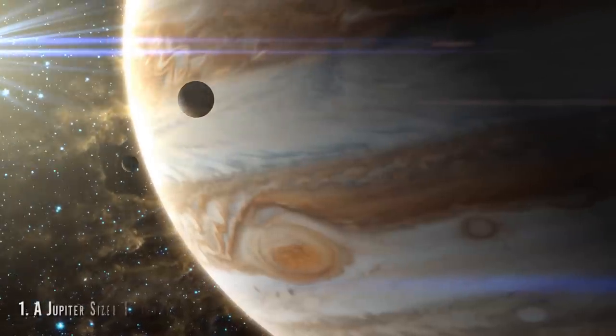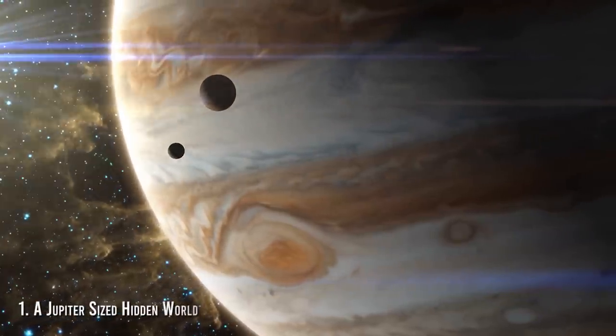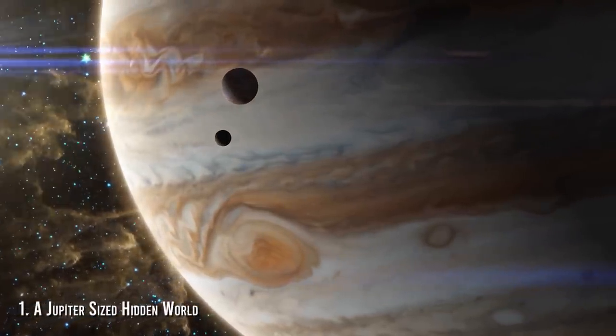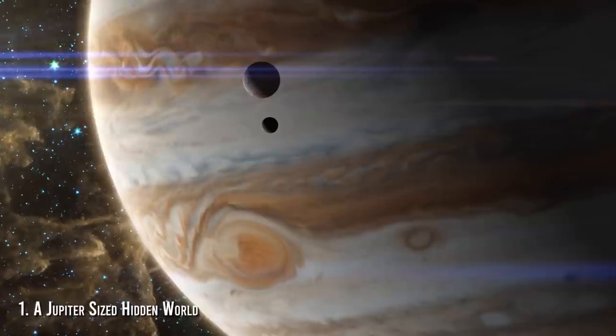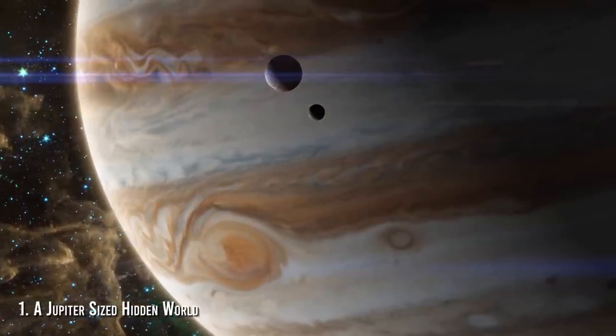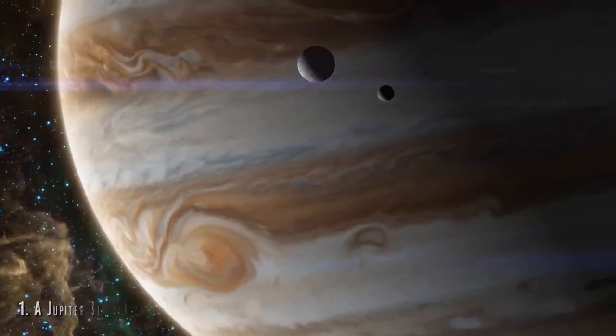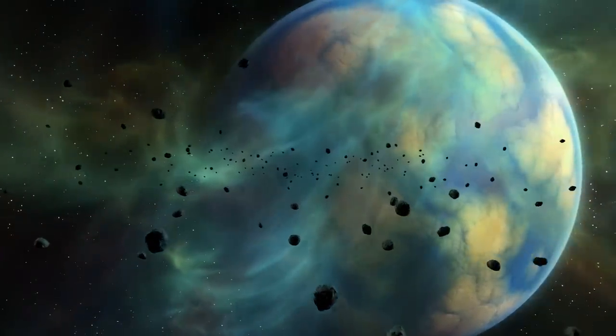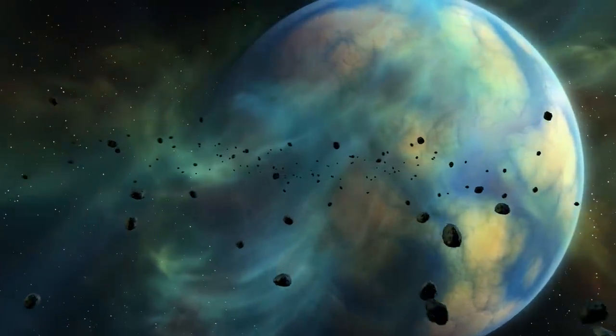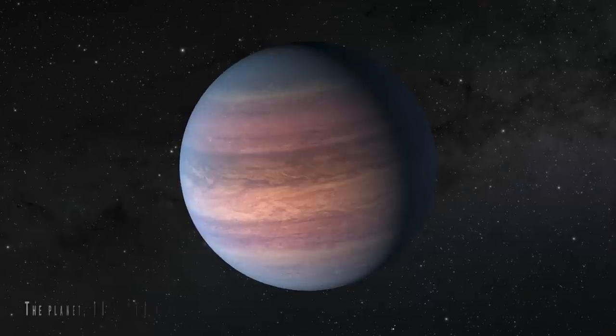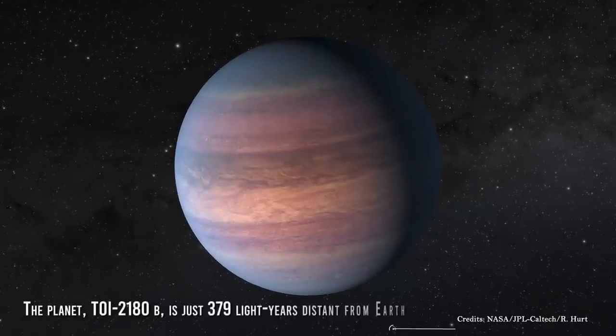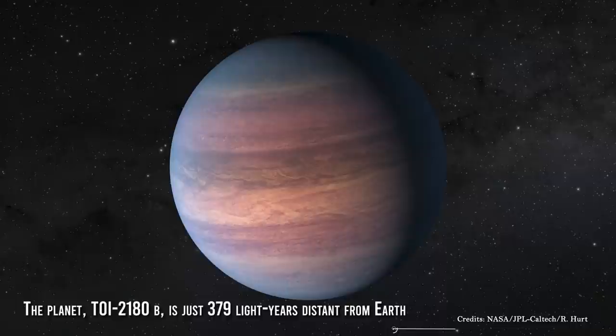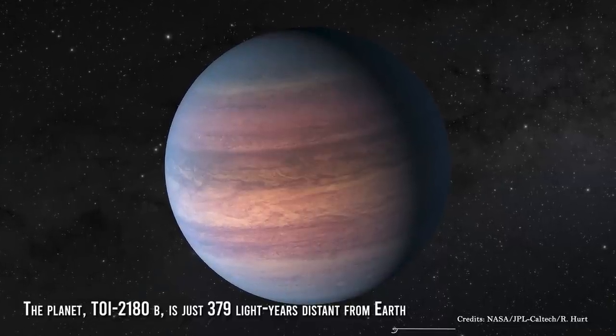Number 1: Jupiter-Sized Hidden World. Astronomers and citizen scientists collaborated to locate a mystery Jupiter-sized planet orbiting an alien star. If their orbital predictions are right, they should be able to view it again in February. The planet TOI-2180b is just 379 light-years distant from Earth.